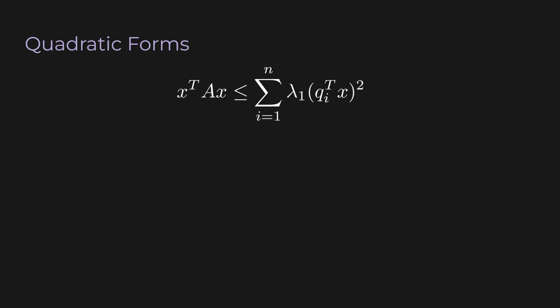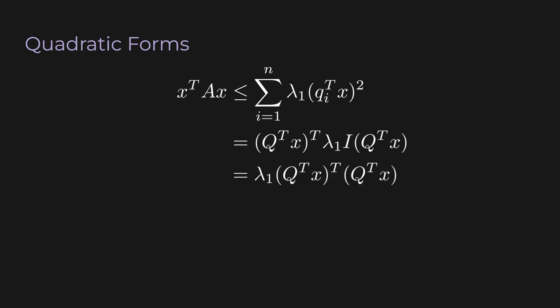Now we go backwards and rewrite the sum as a matrix expression. It's like what we started with, except Λ is replaced by the scalar λ_1 times the identity matrix — we've replaced every diagonal entry of Λ with the greatest eigenvalue. We pull λ_1 out as a scalar, the identity matrix disappears into the product, and distributing the transpose reveals Q times Q transpose. Since Q is orthogonal, Q Q transpose is the identity, leaving us with the satisfying expression λ_1 times x transpose x.